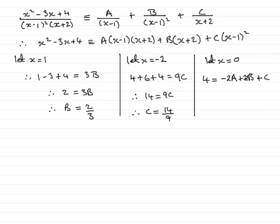Now we know our values of B and C so we can pop them in here and we would have that 4 equals minus 2A. And we'd have 2 lots of B so that would be 4 thirds. And then we have plus C and C is 14 ninths. So what can we do? We could multiply through by 9 if we want to. That will get rid of these fractions.